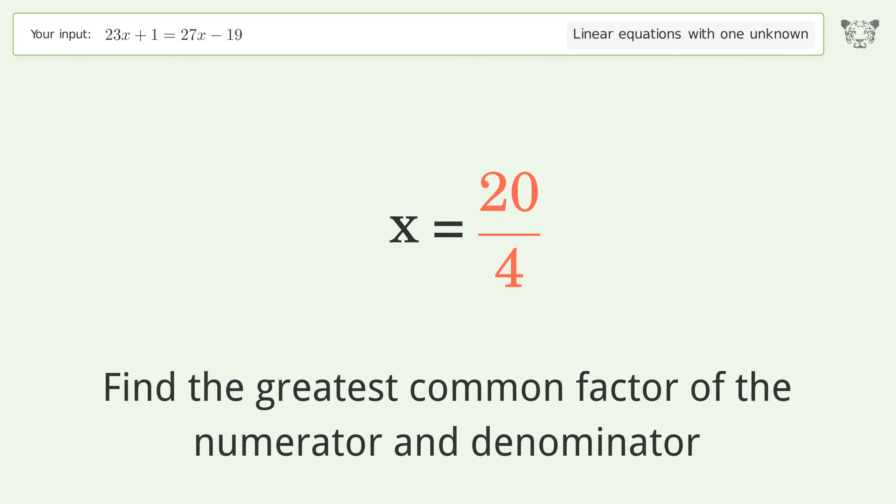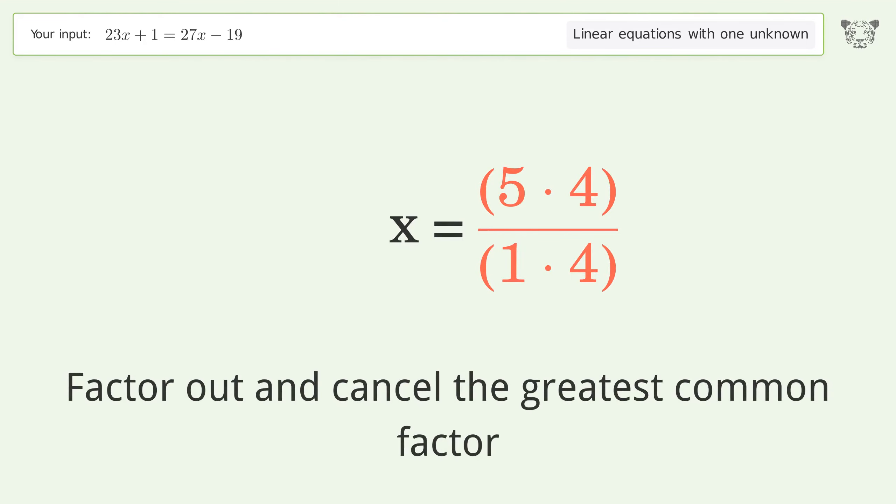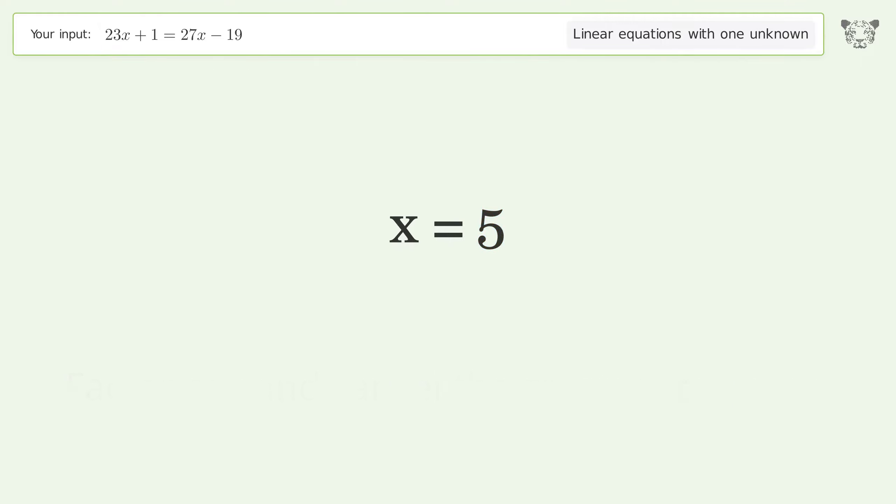Find the greatest common factor of the numerator and denominator. Factor out and cancel the greatest common factor. And so the final result is x equals 5.